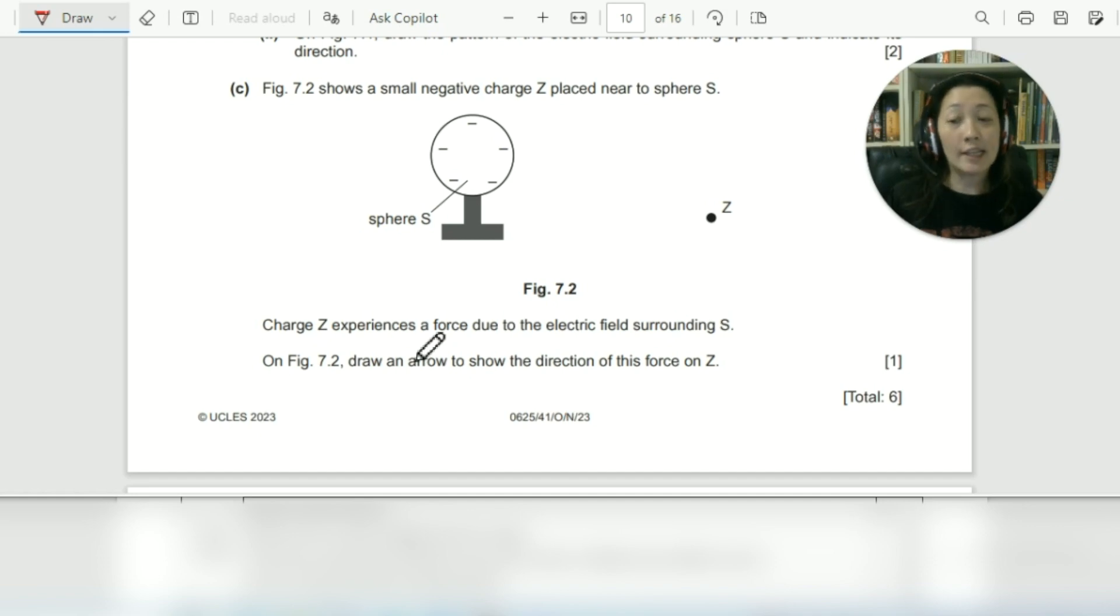Let's move on. C. Figure 7.2 shows a small negative charge Z placed near to sphere S. So this is the sphere and here's the negative charge Z. Charge Z experiences a force due to the electric field surrounding S. On figure 7.2, draw an arrow to show the direction of this force on Z. So we have negatively charged sphere S and negative charge of Z. Now try to recall. What's going to happen to the charge? Is it going to get attracted or is it going to get repelled? That's right. So negative and negative, the charge is going to get repelled. So the force is going to push Z away.